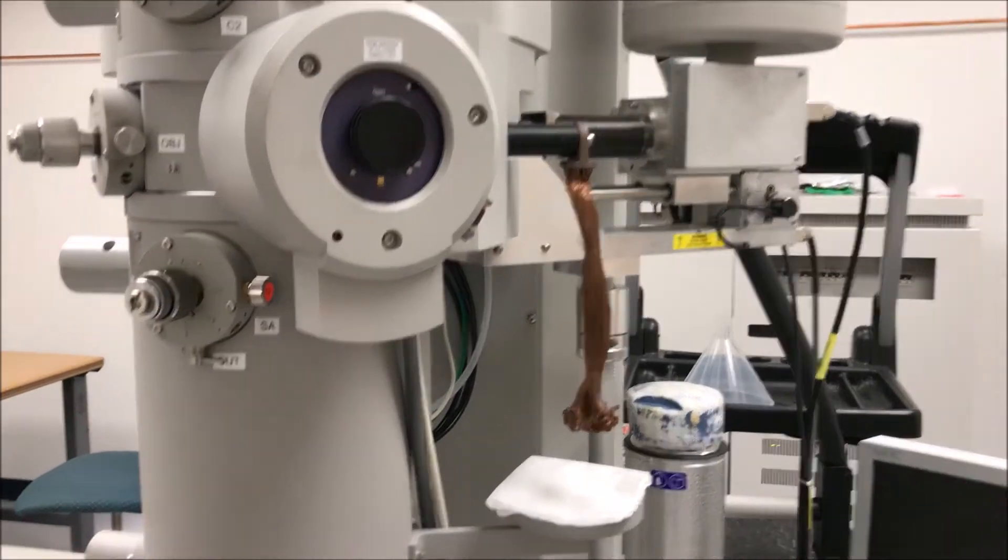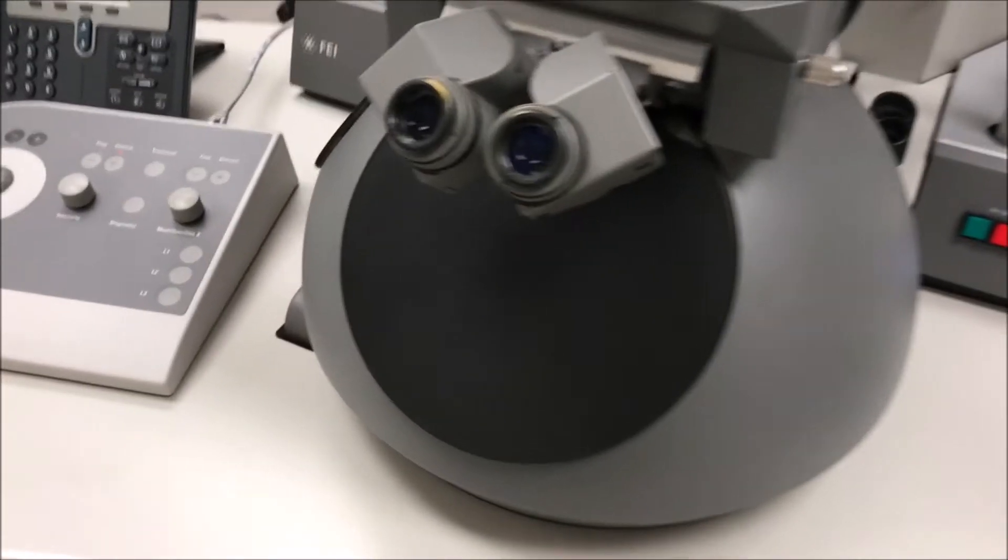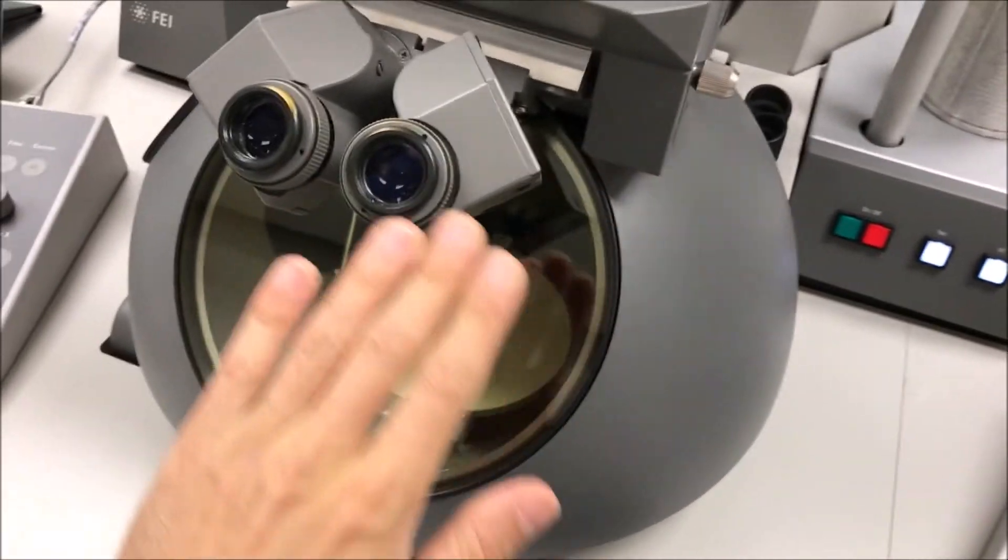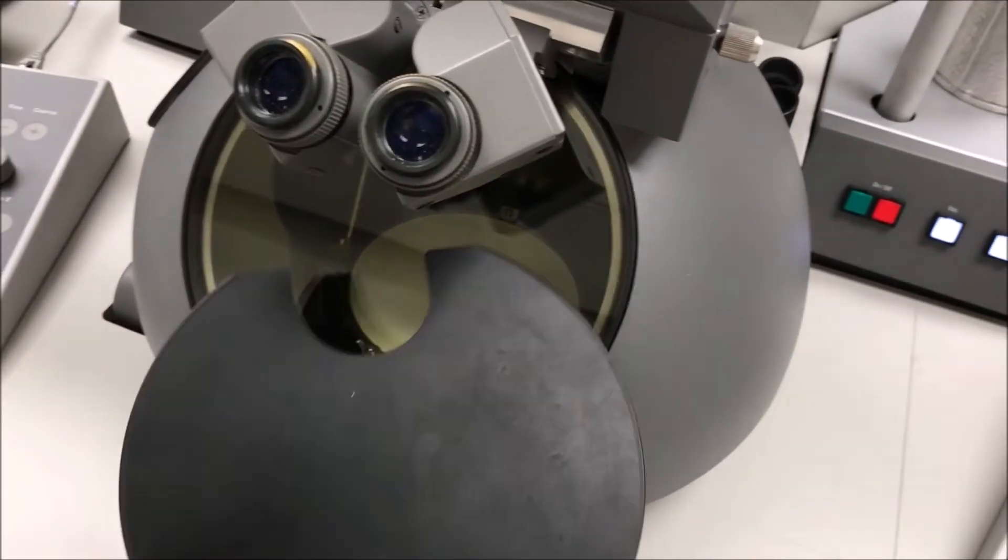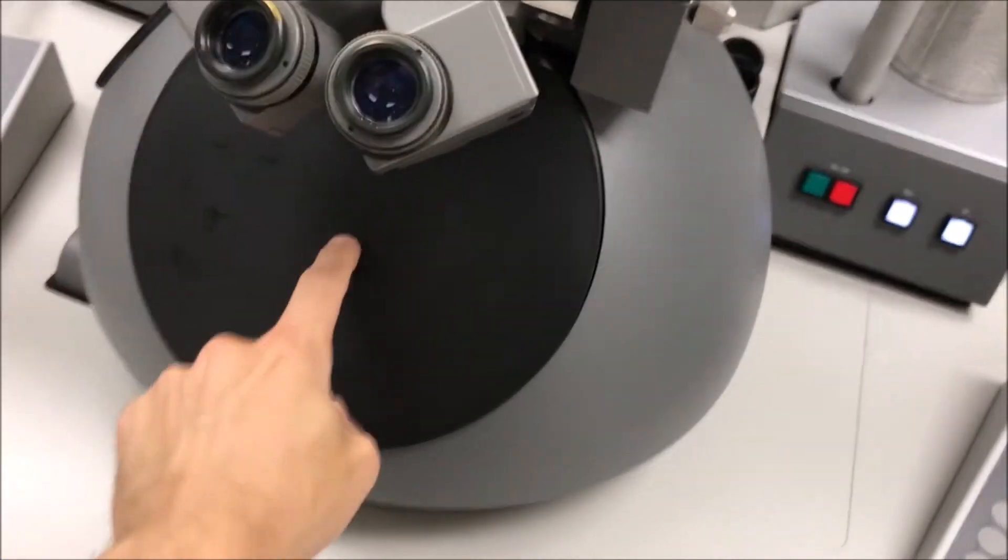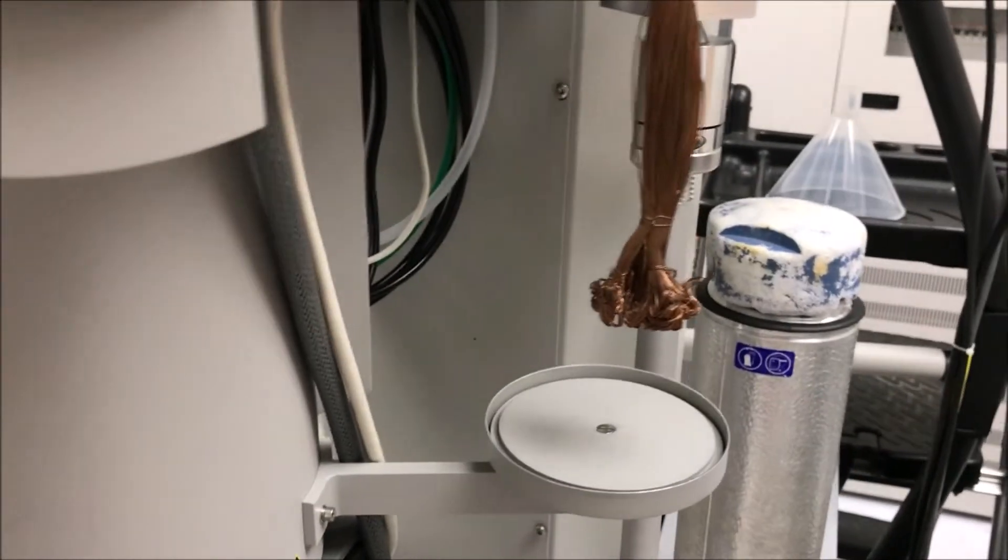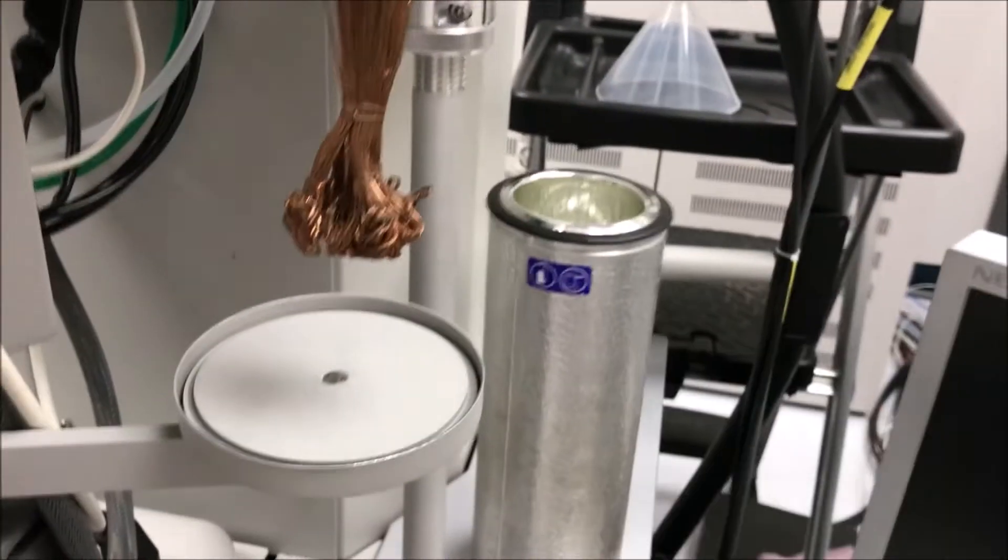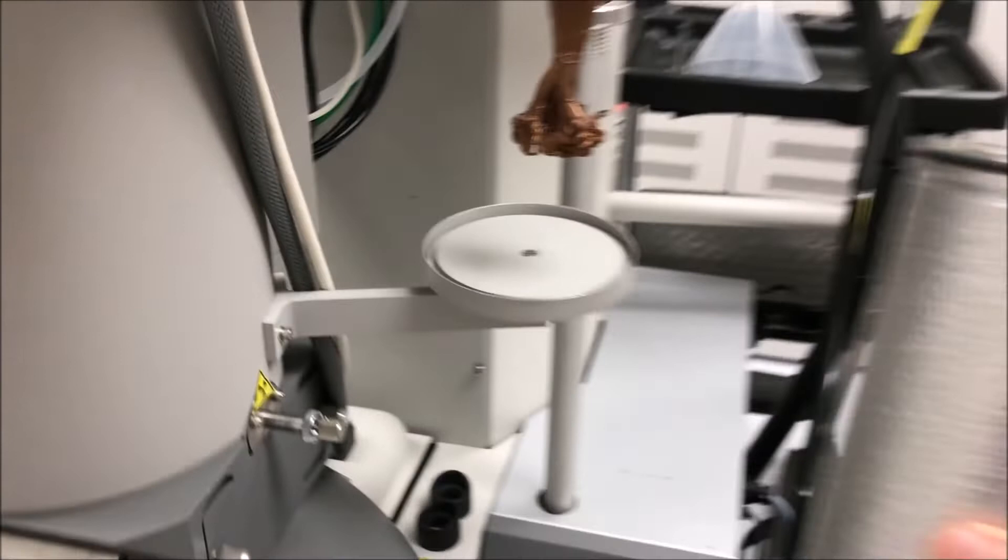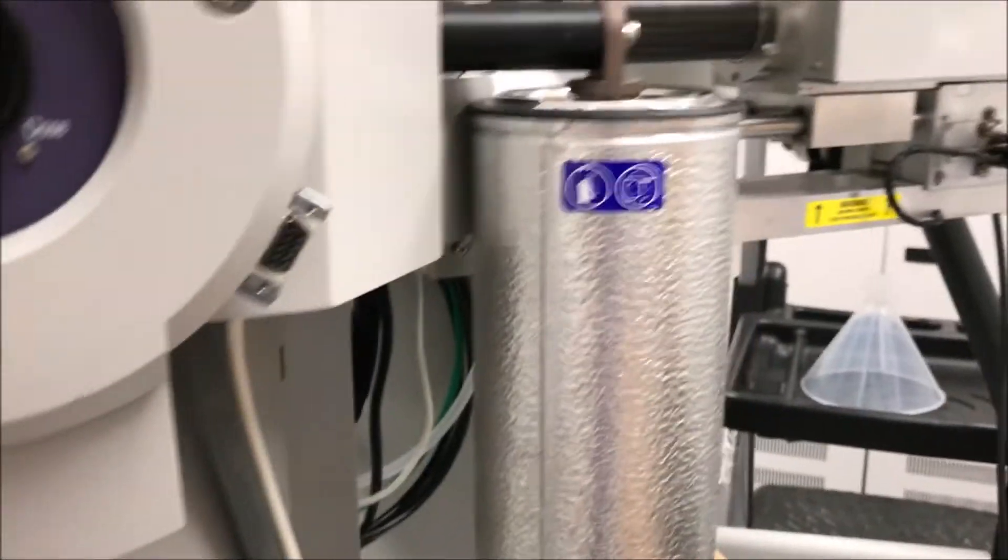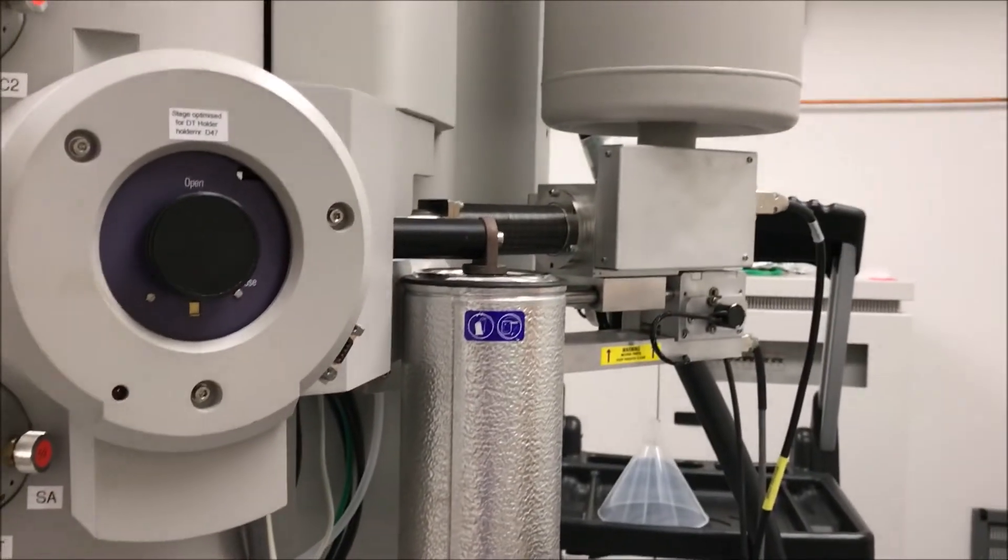The first thing to keep in mind is to make sure your viewing screen is covered with its plastic or rubber cover. You don't want to leave the screen uncovered because if you spill liquid nitrogen onto it, you could cause it to crack, which would be a very expensive repair. Make sure the support base for the canister is clear, then stick the copper braids inside the canister and put the canister onto the support base.